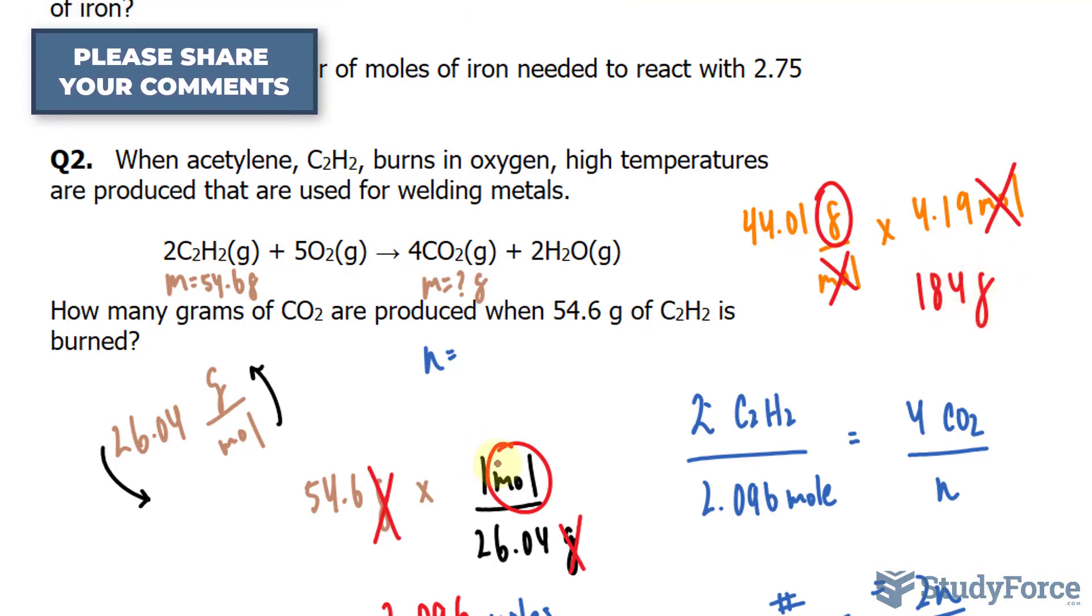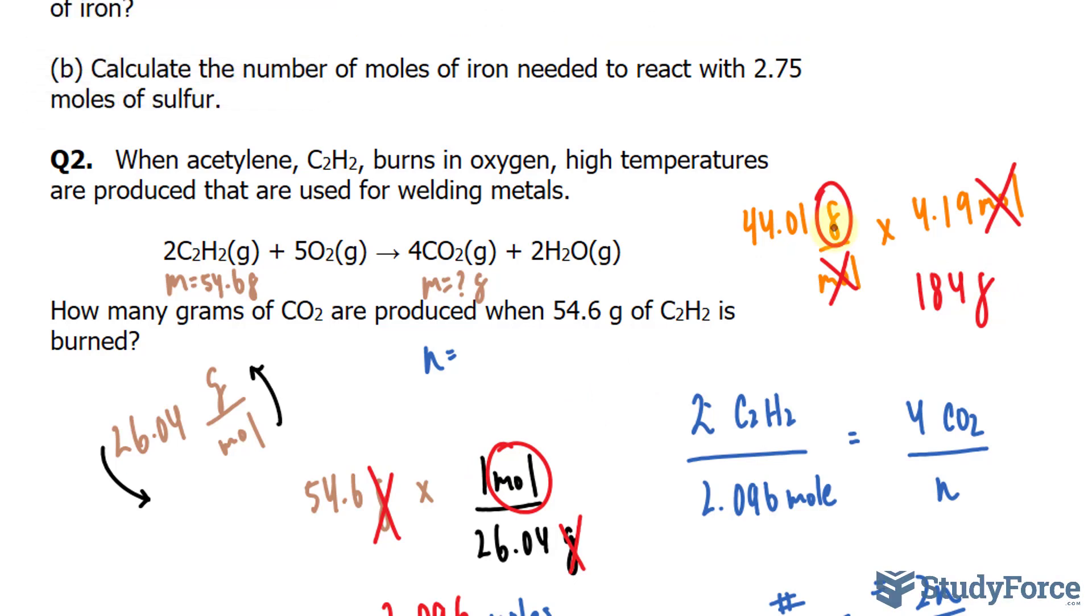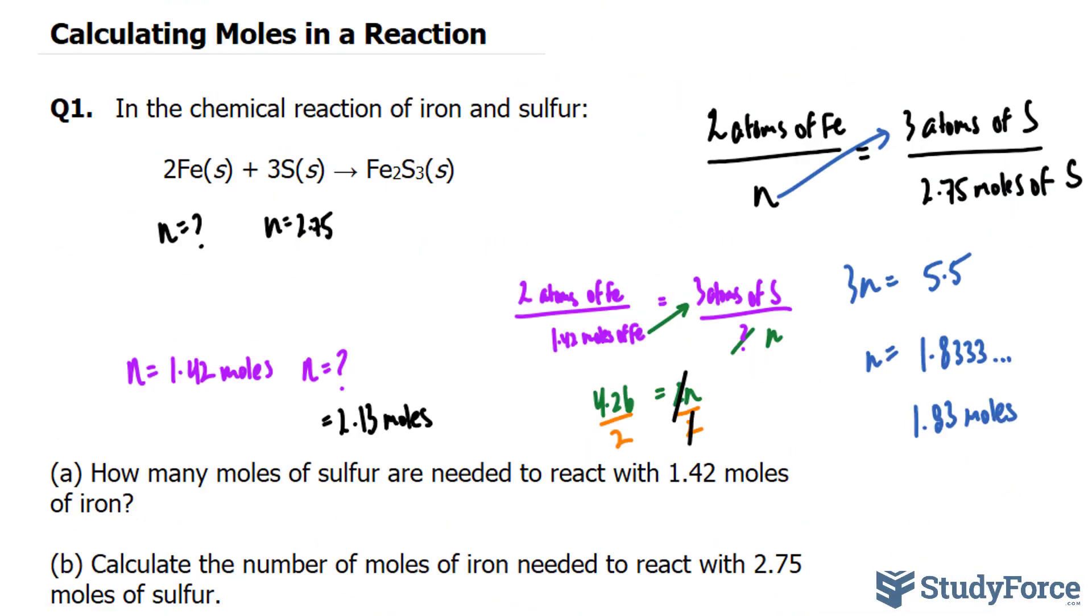The technique that we use to find moles and grams in question number 2 is called dimensional analysis. And you can look up a video that we have dedicated to that in case you're curious as to why I chose this method over the proportion method that we used in question 1. And there you have it. Two questions on how we can use moles in a reaction for calculations.